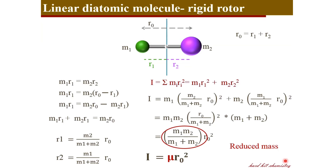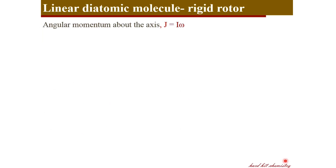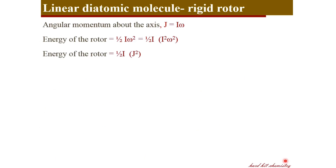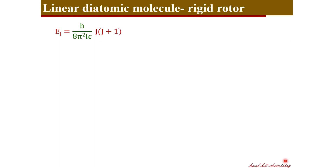r₀ is the bond length and μ is the reduced mass m₁m₂/(m₁+m₂). The angular momentum J equals I·omega, and the energy is related to angular momentum accordingly. Solving the Hamiltonian gives the energy in terms of J (the rotational quantum number), Planck's constant h, the speed of light c, and the moment of inertia I. The term h/(8π²cI) is a constant for a given molecule, called the rotational constant B. The energy of a rotating molecule is therefore expressed in terms of B and the rotational quantum level J.